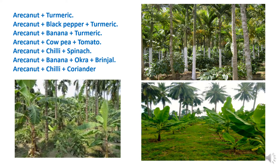Other examples with arecanut base: arecanut is grown with turmeric; arecanut plus black pepper plus turmeric; arecanut with banana and turmeric crops; arecanut with cowpea, tomato, chili, spinach, banana, okra and drumstick. Arecanut is also successful with chili and coriander.